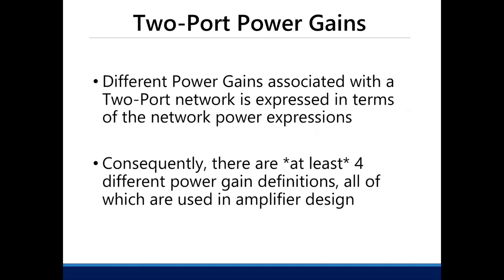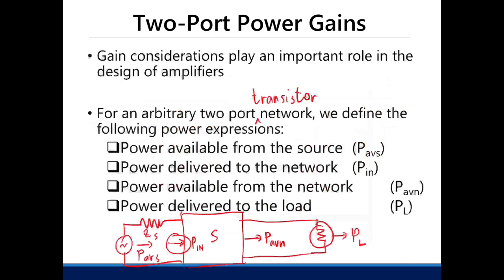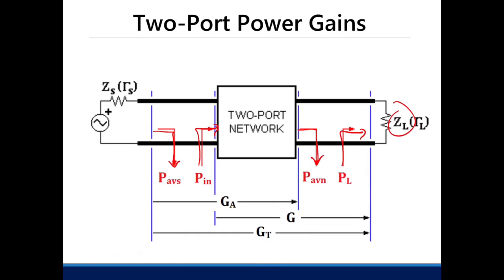Why are there different power gains? It's associated with the different properties of a two-port network. Consequently, there are at least four definitions of power gains. We have four values for different definitions of power, so we can define four different values of gain. We can also get the network gain — that's P_AVN over P_N — but we'll settle with three; we don't really need the other one.